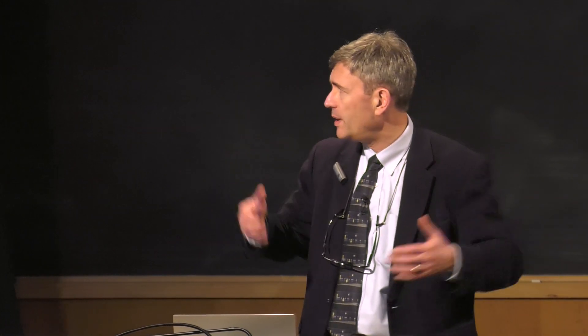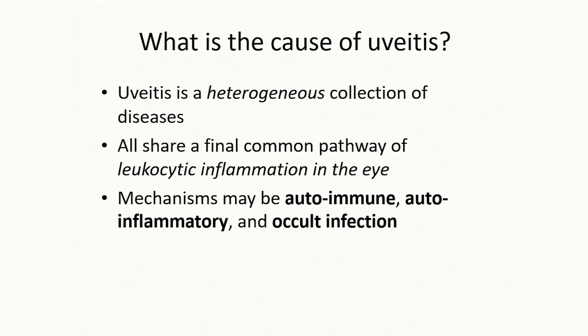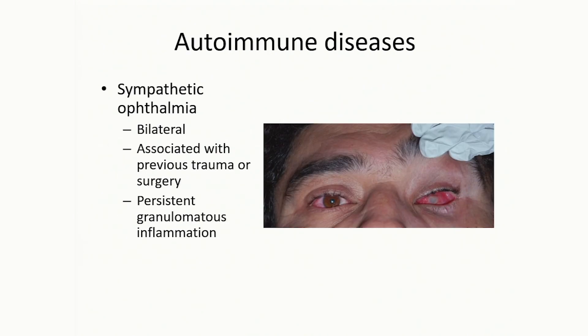When we talk about uveitis, people ask what causes it and what do we do about it. It's really not a disease entity unto itself — it's a descriptive term for any intraocular inflammation. It's a very heterogeneous collection of individual diseases, all sharing a final common pathway of leukocyte infiltration into the eye. That can be because of an autoimmune process, an autoinflammatory process, or occult infection. I'm going to spend most of the talk covering occult infection.